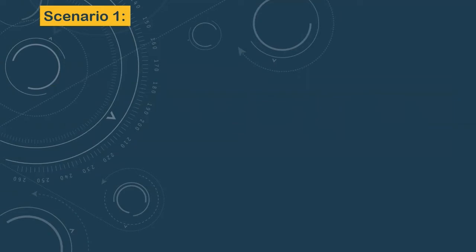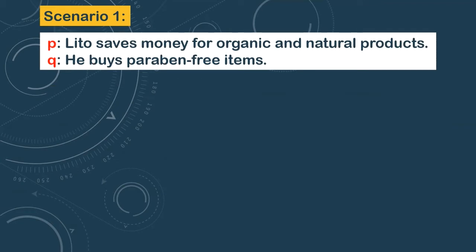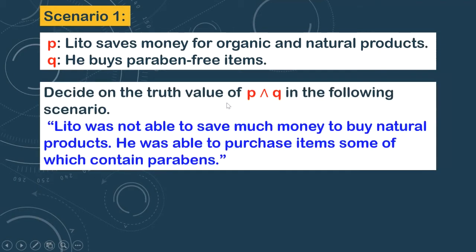So this is the first scenario for example number one. Let P — this is proposition P — 'Lito saves money for organic and natural products.' And then proposition Q: 'He buys paraben-free items.' Now we are going to decide the truth value of P and Q given this scenario.